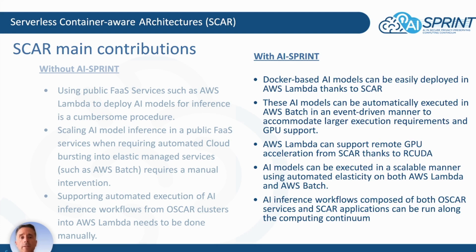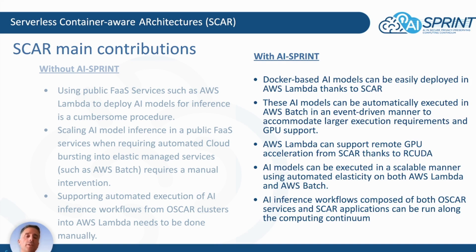AWS Lambda can also support remote GPU acceleration from SCARP thanks to ArcHuda. AI models can be executed in a scalable manner using automated elasticity on both Lambda and AWS Batch. These AI inference pipelines can be composed of both OSCAR services and SCARP applications and can run along the computing continuum, including on low-powered devices such as a cluster of Raspberry Pis.